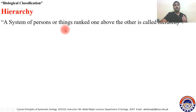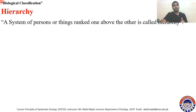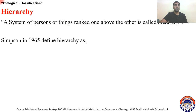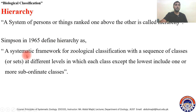What is hierarchy? A system of persons or things ranked one above the other is called hierarchy — from bottom to top or top to bottom. For example, in an army we have ranks from second lieutenant up to general. In a university we have lecturer, assistant professor, associate professor, and professor. Samson in 1965 defined hierarchy as a systematic framework for zoological classification.